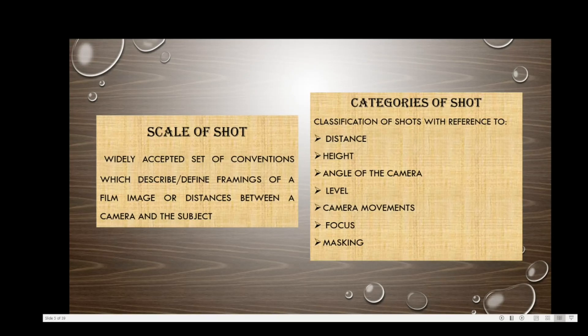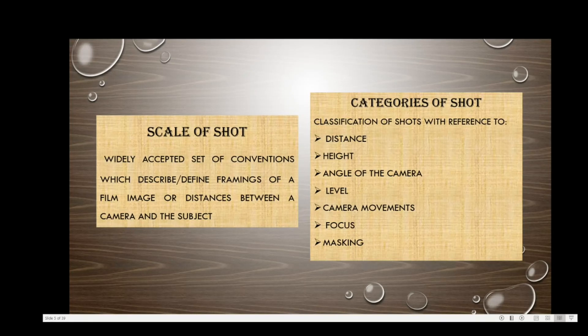Cinematography is ultimately about capturing desired images, and various techniques are used for this. There are different scales of shots — a widely accepted set of conventions that describe the framings of a film image and the distances between camera and subject. Shots are classified on the basis of distance, height, angle of the camera, camera movements, focus, and masking.